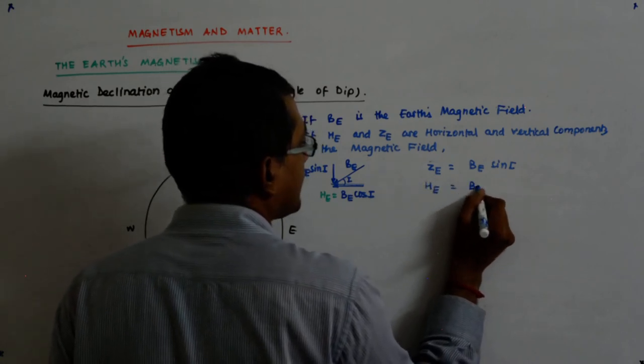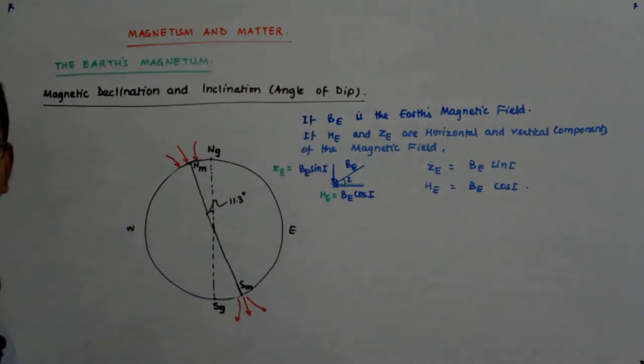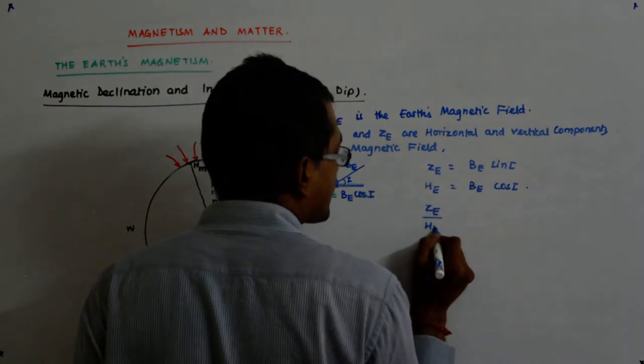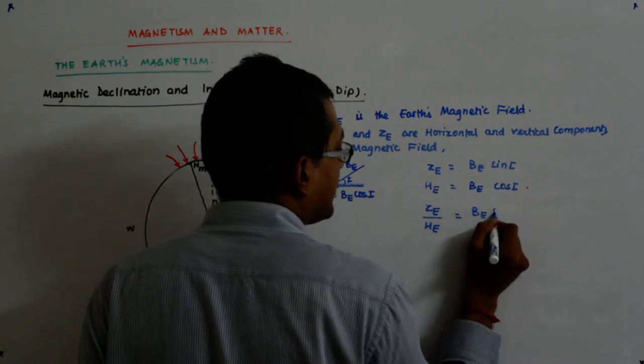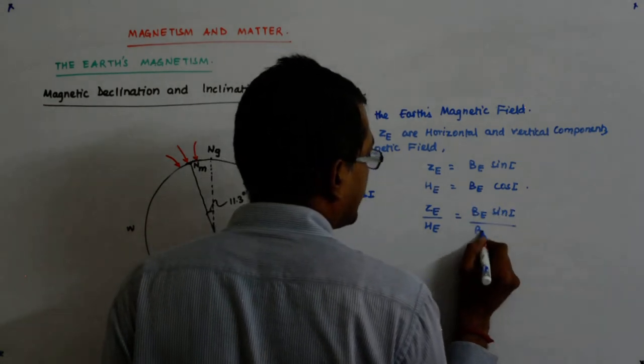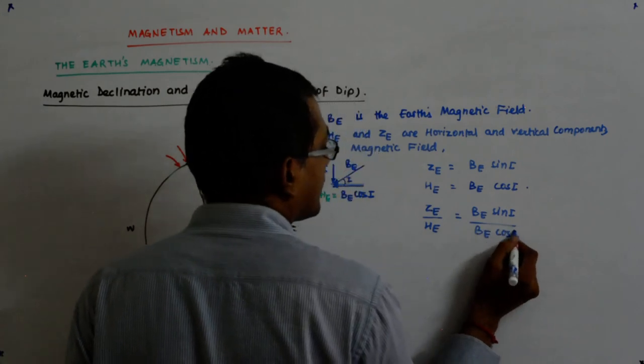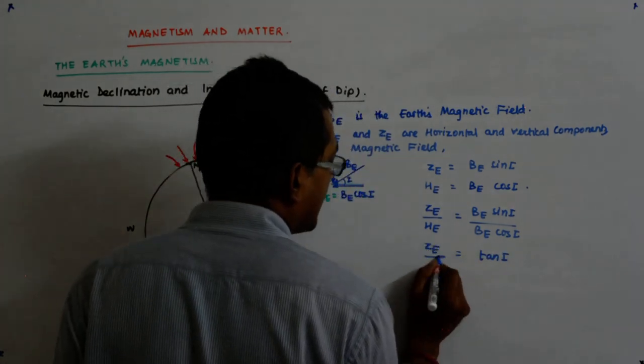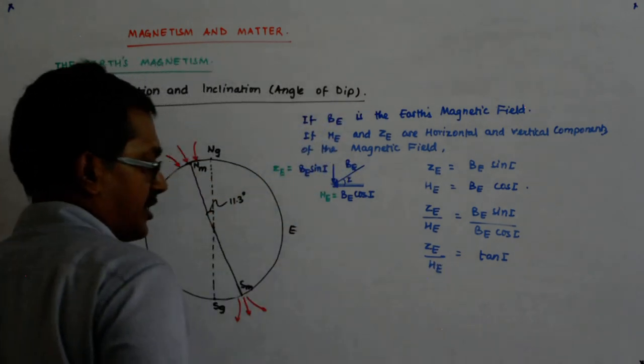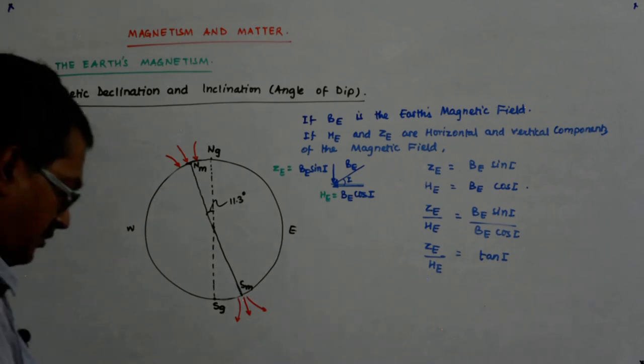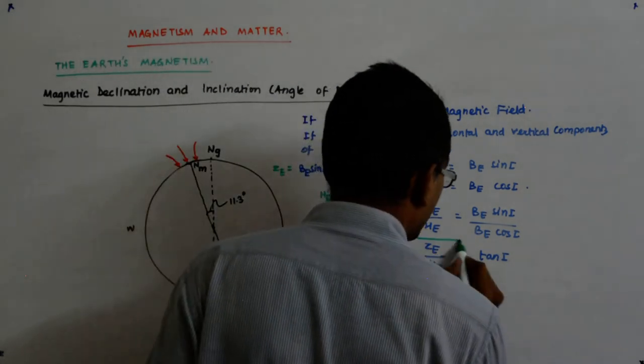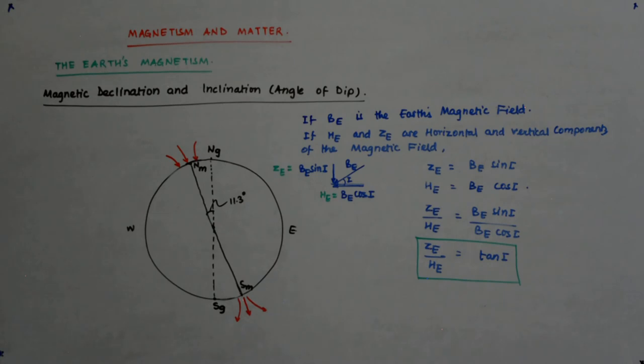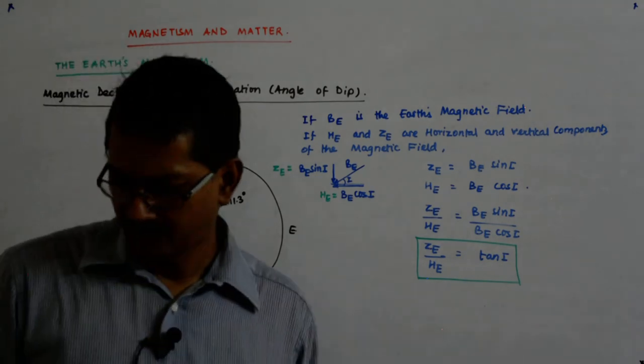Do we see that? Now if I divide them, that is Z_E upon H_E, that becomes B_E sine I upon B_E cos I. So that gives me tan I. So tan I is Z_E upon H_E. So Z_E upon H_E is my tan I. Do we understand that?